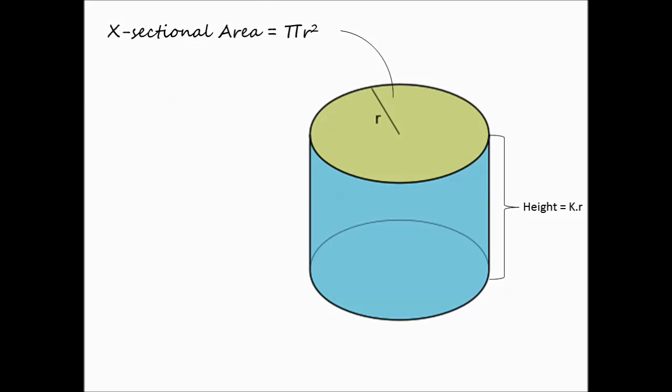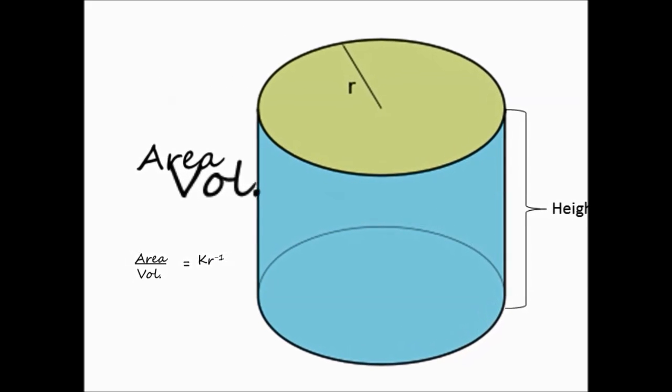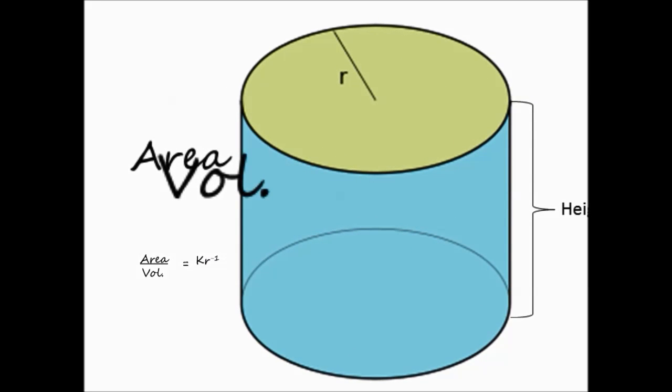For a cylinder, cross sectional area again goes as the square, volume as the cube. Area goes as volume to the power of 2 by 3. Area to volume ratio inversely proportional to the radius. As the radius increases, volume increases faster than area and the ratio decreases.